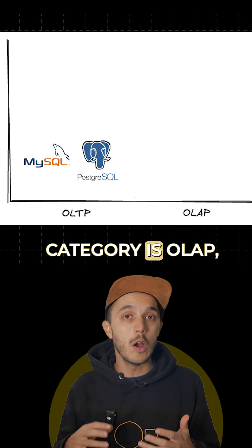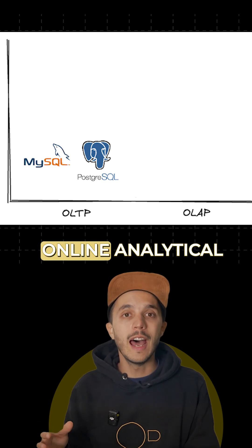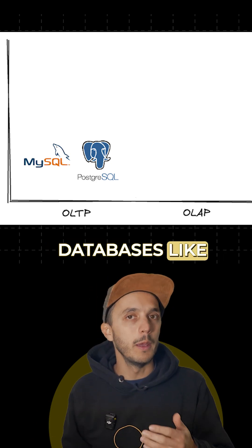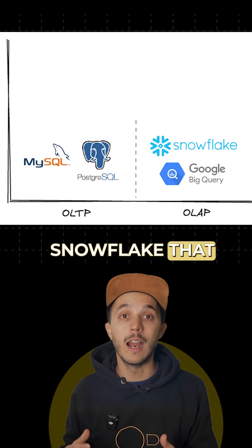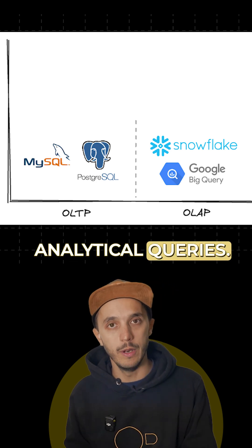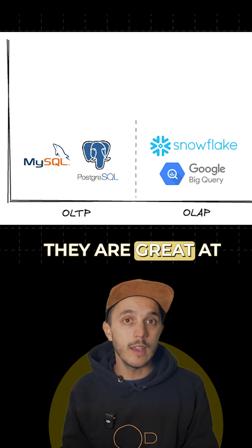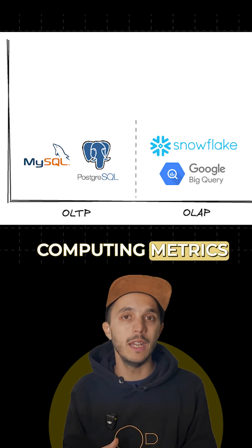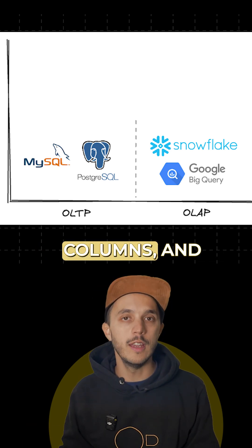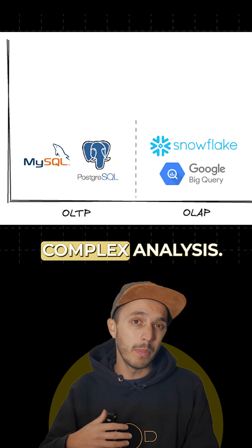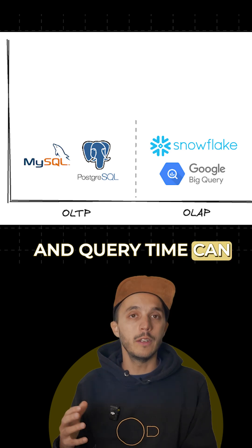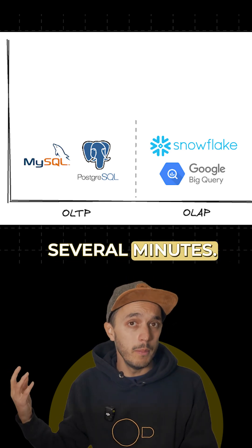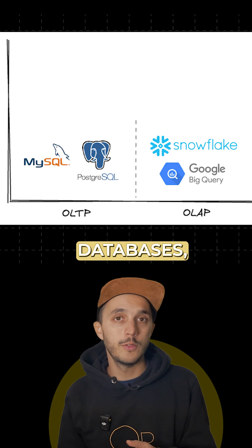The second category is OLAP, Online Analytical Processing. These are databases like BigQuery and Snowflake that are built for analytical queries. They are great at processing large datasets, computing metrics across many columns, and supporting complex analysis. Query time can range from 100 milliseconds to several minutes.